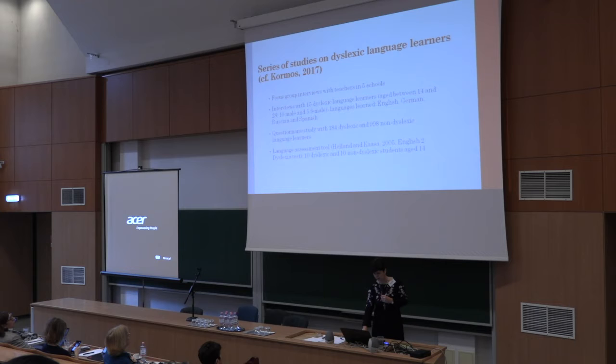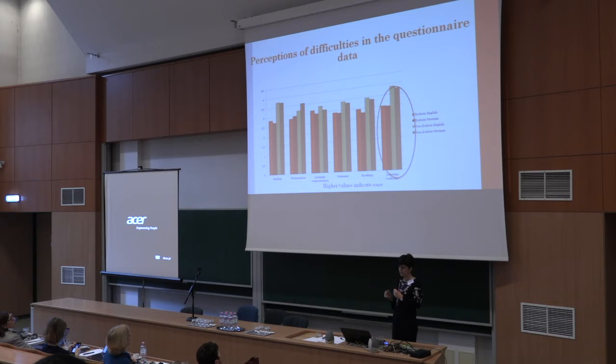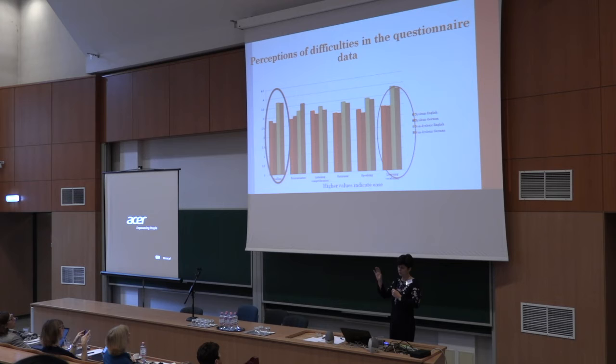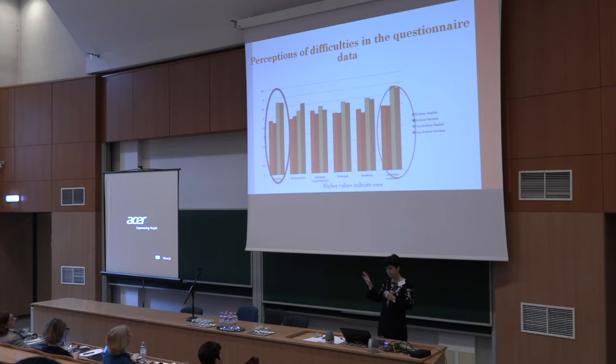What we found, relating to the difficulties students report in the questionnaire — what they find difficult when learning languages — is that one of the top things was learning vocabulary. Almost every dyslexic student would say they find memorizing words really, really challenging. The other thing they mentioned was spelling. They did experience difficulties in other areas as well, but for example in listening comprehension and speaking the difference was smaller. This matched what teachers also reported in terms of where students need more support.